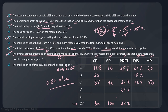Statement four: the selling price of D is 25% of the marked price of B. So if the marked price of B is 4a, the selling price of D is a. Selling price of D equals 25% of marked price of B — we have now used this statement.